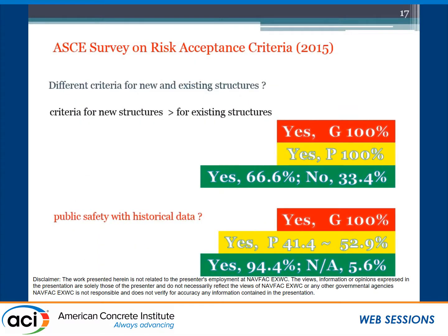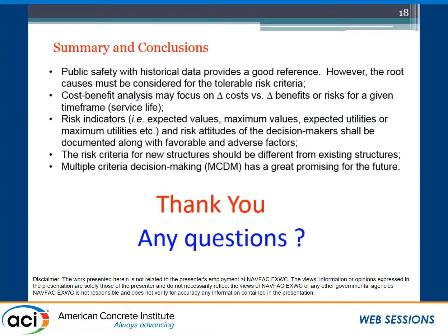Another survey question was: should we use the same criteria for new structures as for existing structures? Almost 100% said yes, but still about one-third of professors said no — arguing that existing structures should have different criteria. The last question was whether we can use historical data to establish the criteria. Government engineers and professors say yes, but only about 50% of practical consulting engineers agreed that they use historical data. This reflects the reality of practice.